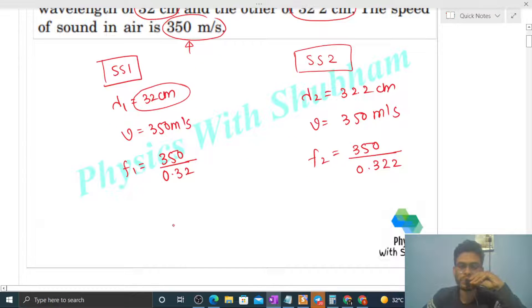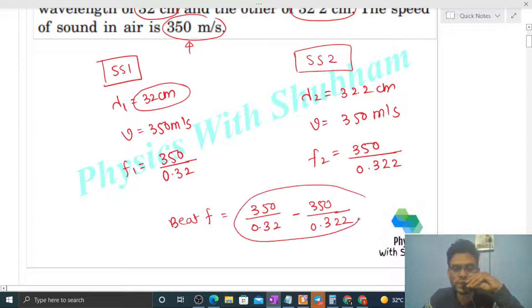Now you need to find out beat frequency. Beat frequency is nothing but difference in frequencies. It means 350 divided by 0.32 minus 350 divided by 0.322 - find out this answer.